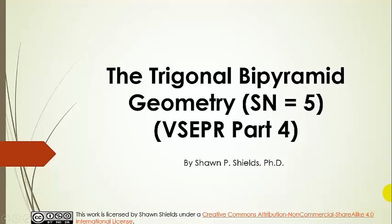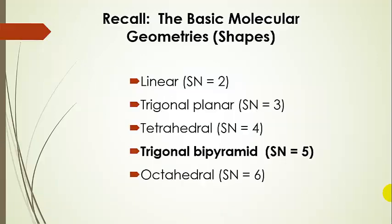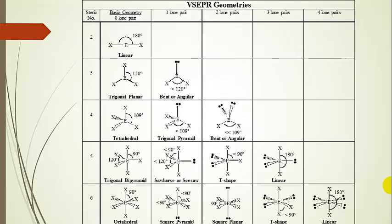The trigonal bipyramid geometry for steric number 5. This is VSEPR part 4. We've gone over steric numbers 2 through 4 so far — the linear, trigonal planar, and tetrahedral geometries — and now we're going to talk about the trigonal bipyramid geometry for steric number 5. In the last presentation, we'll talk about the octahedral geometry. The basic geometry for steric number 5 is trigonal bipyramid.